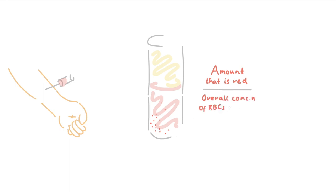If we take somebody's blood, spin it down to separate red blood cells from plasma, and then divide the overall amount that's red in the tube by the overall concentration of red blood cells in the mixture, we get this value called MCV, mean cell volume, which gives us a rough idea of the average volume of this person's red blood cells.